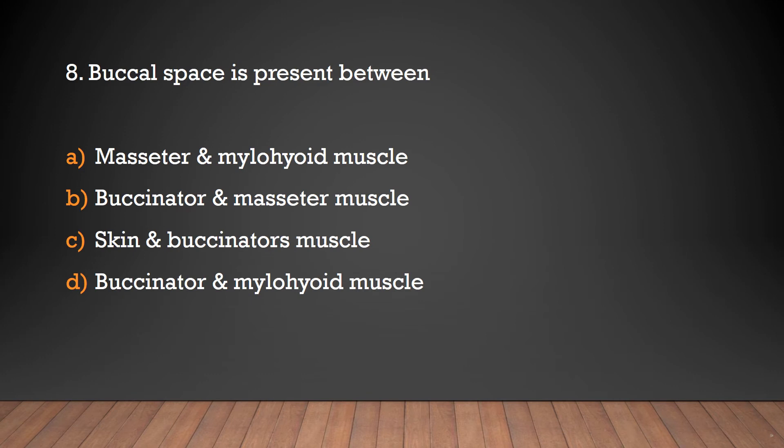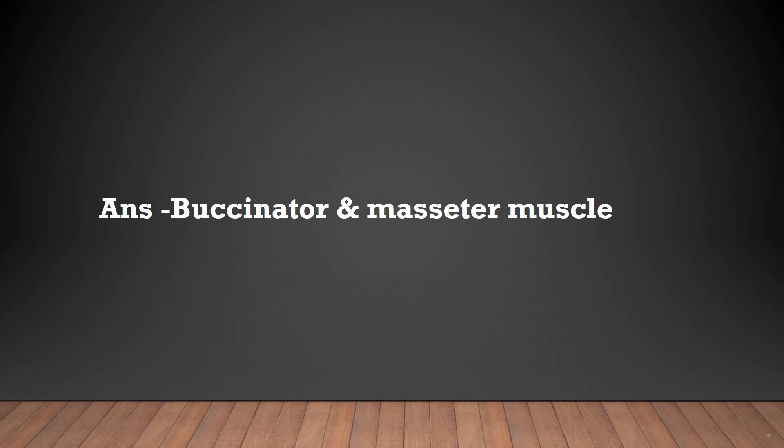The buccal space is present between: masseter and mylohyoid muscle, buccinator and masseter muscle, skin and buccinator muscle, or buccinator and mylohyoid muscle? The answer is buccinator and masseter muscle.